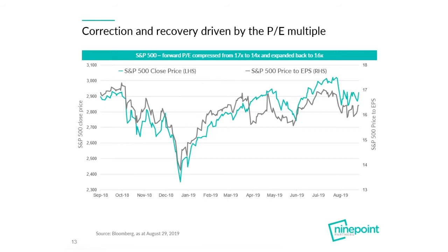From my perspective, the real driver of this correction and recovery was the US Federal Reserve. In late 2018 they had a very hawkish bias, looking to hike rates several times, and the market panicked. Early in 2019 they pivoted to dovishness, and the market recovered because we felt the Fed was no longer going to hike us into a recession. We've seen two interest rate cuts year to date, both of 25 basis points each, and I'm expecting at least one more before year-end.